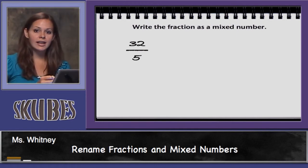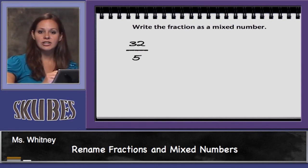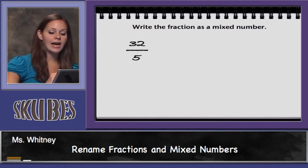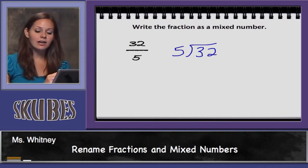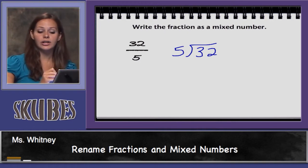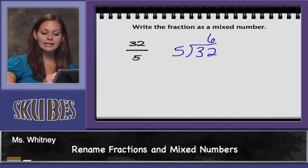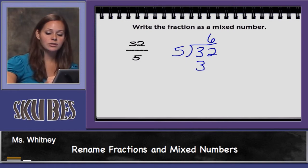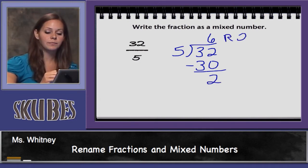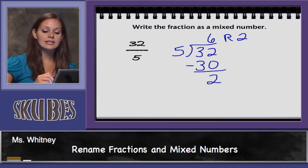Now, let's write the fraction as a mixed number. We have the fraction thirty-two-fifths. We need to divide thirty-two by five. Thirty-two divided by five. I asked myself, how many times can five fit into thirty-two? I know that six times five is equal to thirty. And, I can subtract to find my remainder of two. So, six remainder two. Thirty-two-fifths is equal to six wholes and two-fifths.